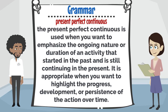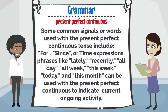The present perfect continuous is used when you want to emphasize the ongoing nature or duration of an activity that started in the past and is still continuing in the present. It is appropriate when you want to highlight the progress, development, or persistence of the action over time. Common signal words include 'for,' 'since,' or time expressions. Phrases like lately, recently, all day, all week, this week, today, and this month can be used with the present perfect continuous to indicate current ongoing activity.